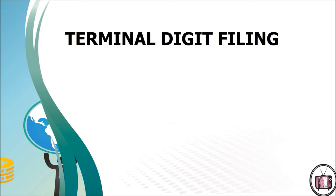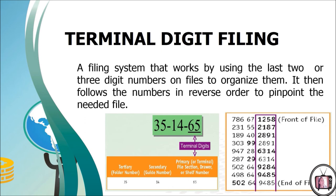Terminal digit filing is another type of filing arrangement. It is a filing system that works by using the last two or three digit numbers to organize files, then follows the numbers in reverse order to pinpoint the needed file. As a result, this numerical system of filing is efficient for many large-scale companies. In terminal digit filing, numbers are divided into two groups separated by a space or a hyphen, and numbers are read from right to left. The end digits are the terminal digits and are used as the primary division under which a record is filed.